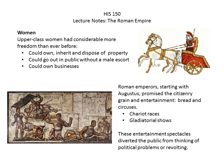Roman emperors, starting with Augustus, promised the citizenry grain and entertainment — known as 'bread and circuses.' A circus was not clowns and elephants but a circuit, a racetrack — they had chariot races and gladiatorial shows, all free activities. The purpose was to keep people occupied: if people are focused on food and entertainment, they don't think about political issues or revolting. Today, going to McDonald's for a dollar or watching Netflix for $8 a month is pretty much the same idea.